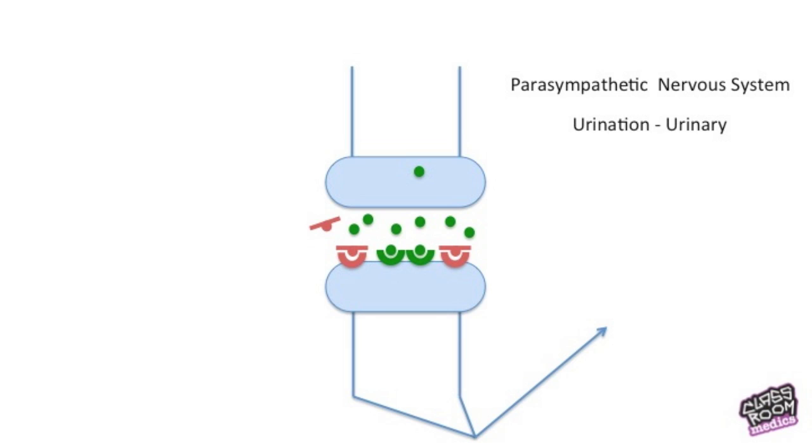So acetylcholine is used a lot in the parasympathetic nervous system. Depending on which nerves have been affected, your parasympathetic nervous system makes you urinate. So people affected by sarin urinate themselves, they defecate themselves. The parasympathetic nervous system and acetylcholine causes gastric stimulation, so you actually move everything through your bowel and you poo yourself.